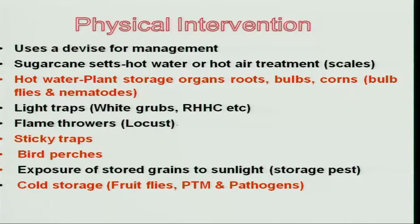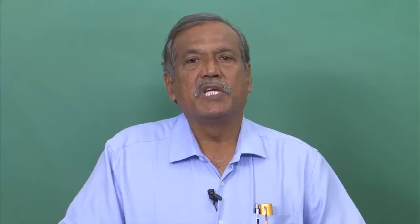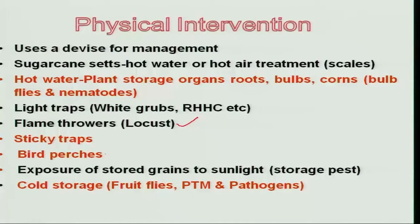Another important physical device is flame throwers, which can also be simply called bonfires or setting up of fire in the open field. Some insects have the habit of emerging from the diapause stage immediately after early showers at the beginning of the season — for example, red hairy caterpillars, root grubs, and some chafers which are hiding in the soil. This behavior can be used to our advantage; setting up bonfires in the middle of the field using last season's crop residues is a simple way of trapping and killing insects on a large-area basis.